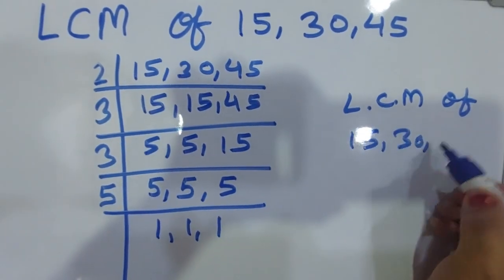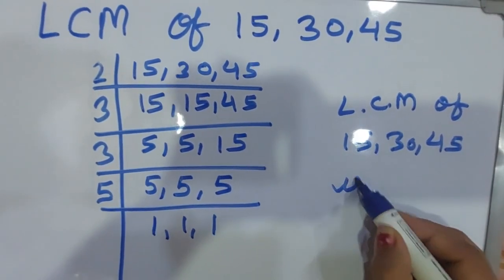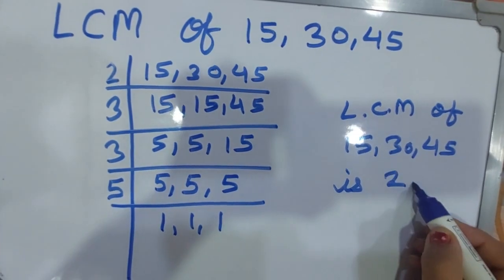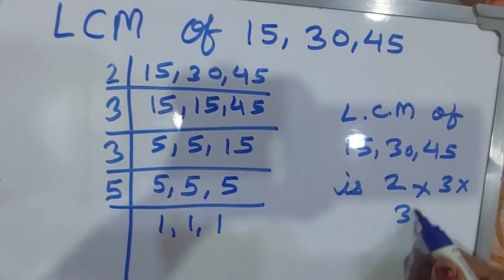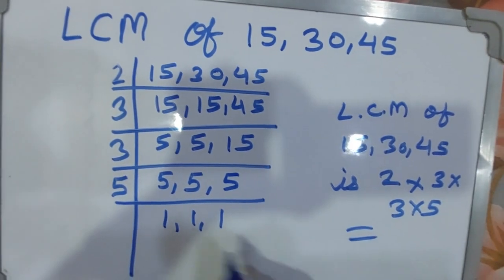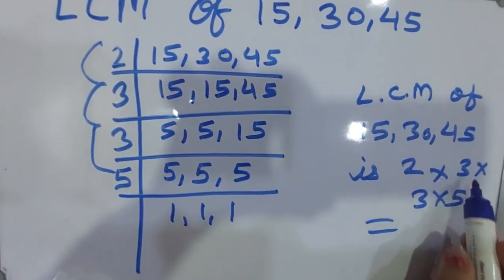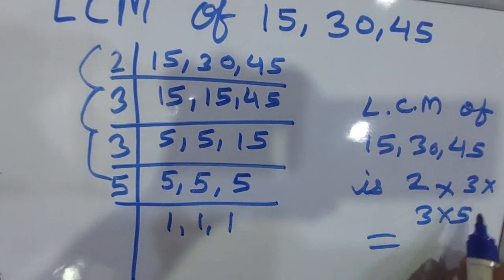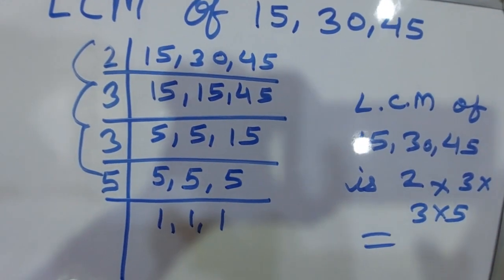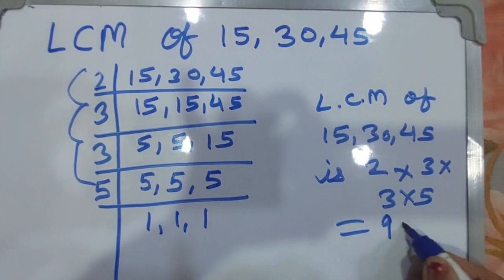You can multiply all these numbers and take the answer. All these numbers multiplication: 2 times 3 is 6, 6 times 3 is 18, and 18 times 5 is 90. This is the answer.